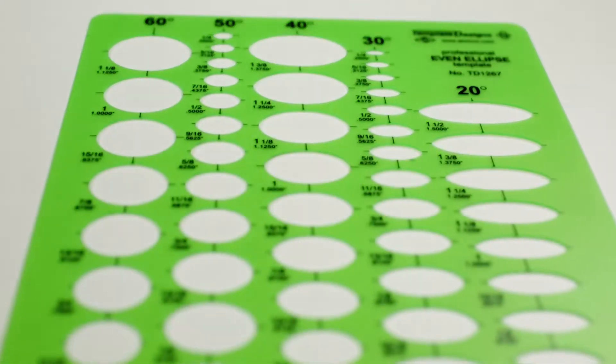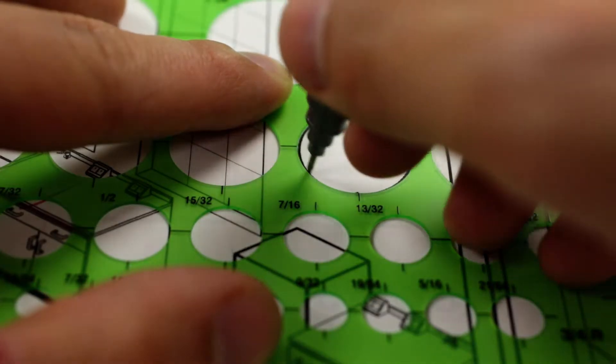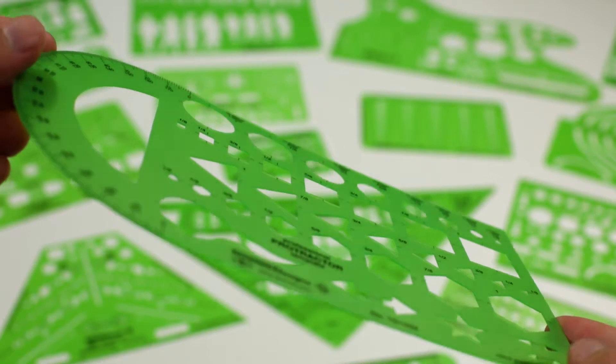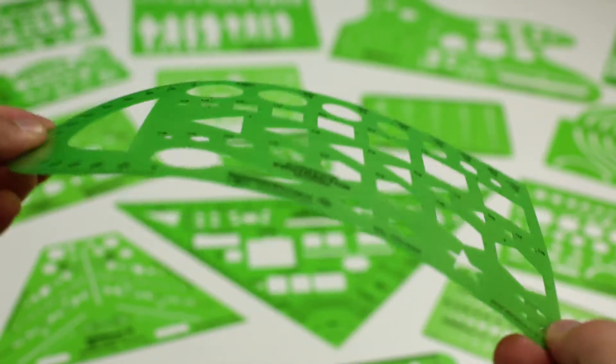All of our templates are milled, not punched out or pressed. The milling process ensures precision accuracy. Our templates are made from a non-glare, odor-free, flexible, durable, translucent green plastic.